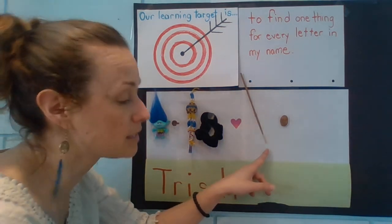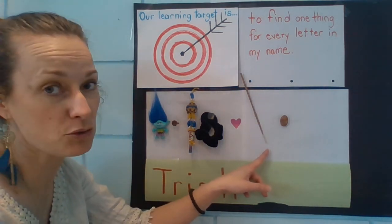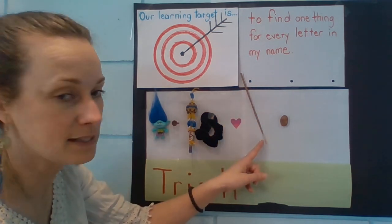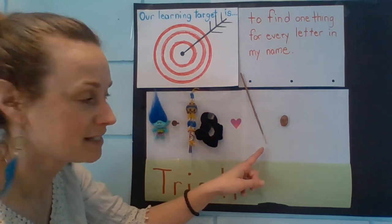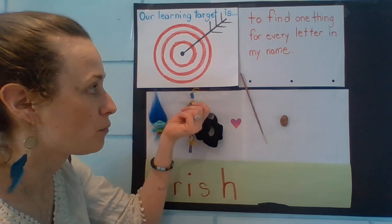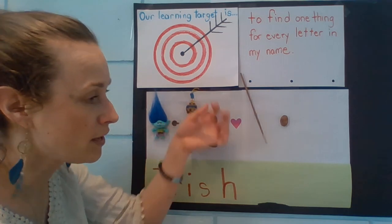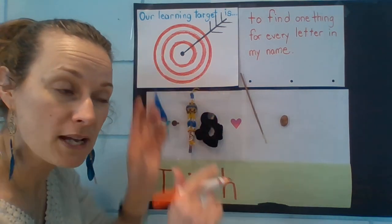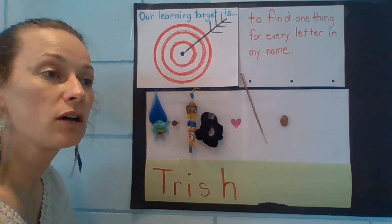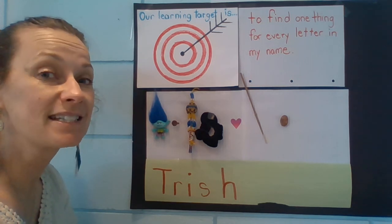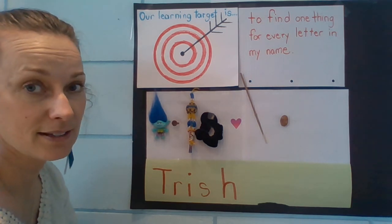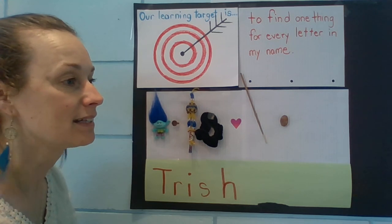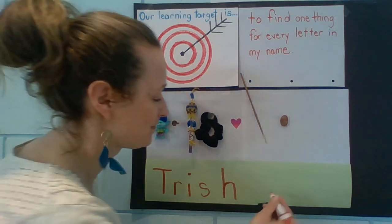I had to go find another thing that starts with I, and that was really tricky. This long stick smells nice. When you light it on fire and put it into a little stand, smoke comes up and the smoke smells nice — it's called incense. It's another I.